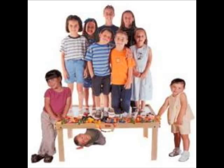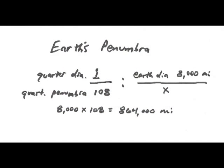So the ratio is created, quarter diameter of 1 to penumbra length of 108, and the other ratio is Earth's diameter of 8,000 miles to the penumbra length X. Cross multiply and divide the ratios to find the distance X. You then get the length of the Earth's penumbra, 864,000 miles.